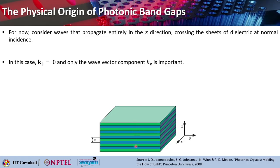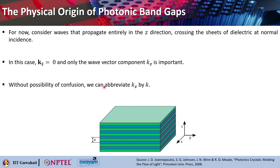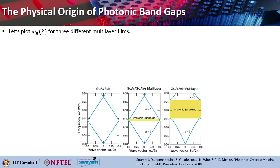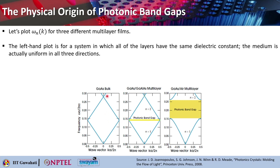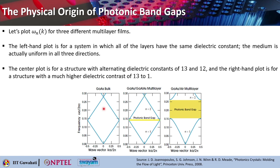We consider that the waves propagate entirely in the z direction — that is an assumption when the waves cross the sheets of this dielectric at normal incidence. In that case it becomes simple: you can consider k-parallel to be 0 and only the wave vector along the z direction, k-z, becomes important. To remove all confusion, you can simply write k-z as k. Then we plot these three different multilayer films: a system where you just have gallium arsenide bulk — a homogeneous medium with no periodic variation of refractive index — and you can see that there is no band gap.